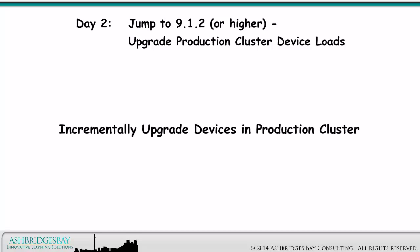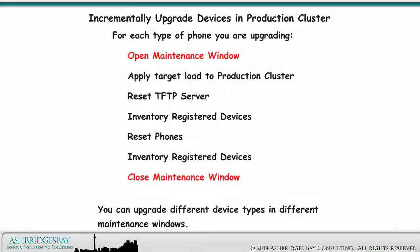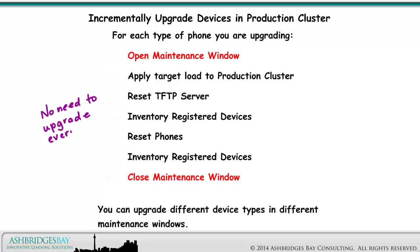We will incrementally upgrade devices in the production cluster. For each type of phone you are upgrading, open the Maintenance window — we need to do this because we will be resetting phones and there may be service interruption. Apply the target load to the production cluster, reset the TFTP server, inventory registered devices, reset phones, inventory registered devices again, and close the Maintenance window. There's no need to upgrade everything at once — we can repeat this as needed and upgrade different device types in different maintenance windows.